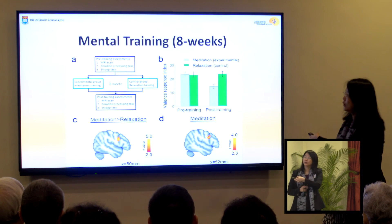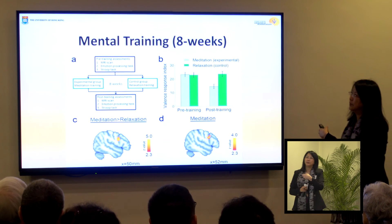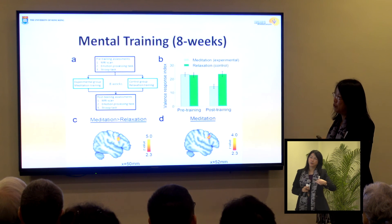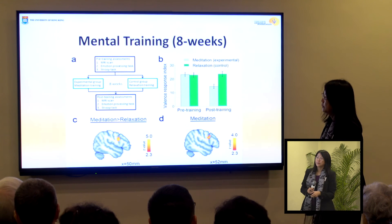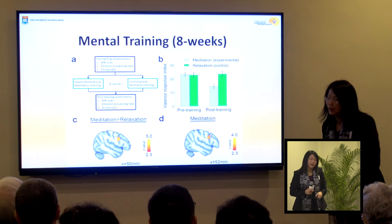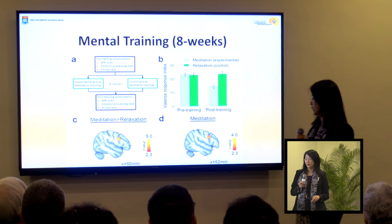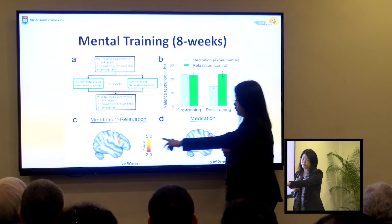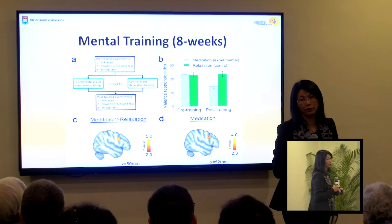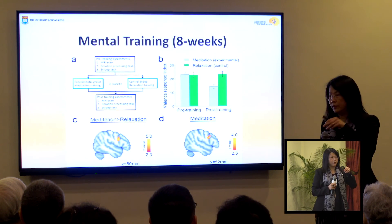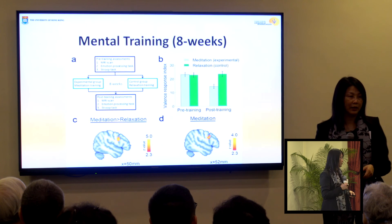The previous study looked at meditators training for over 10 years. I thought that 10 to 20 years of course could bring changes to the brain, but that might be a little too late for me. So we asked: how about a shorter time? Based on our previous findings, we developed an 8-week training protocol focused on emotion processing, and found that even with 8 weeks of training there was an increase in brain volume in a particular area in the prefrontal region, which is important for the affective changes we observed.